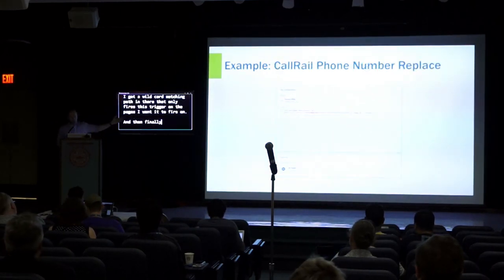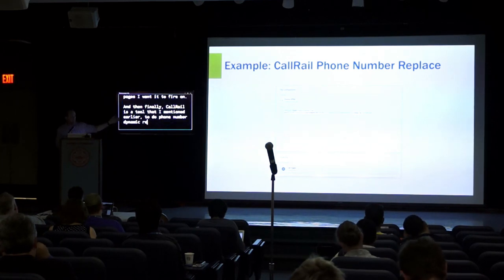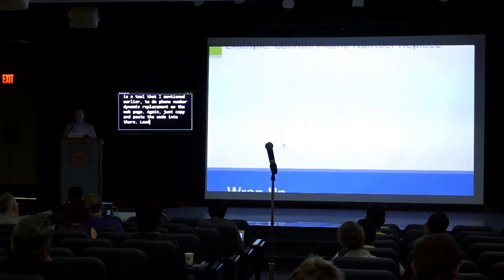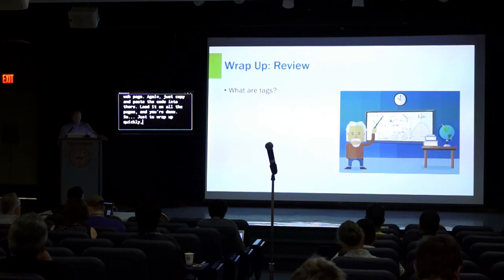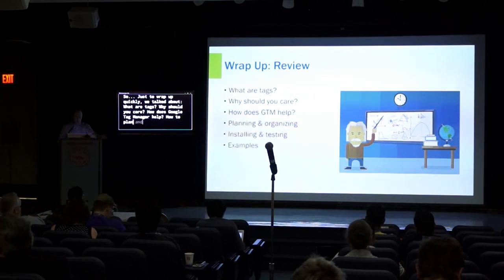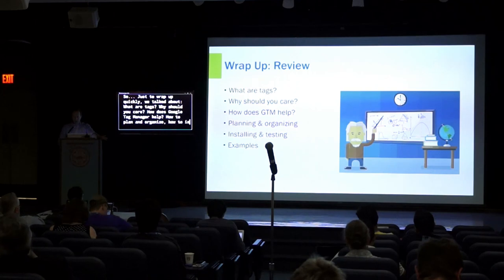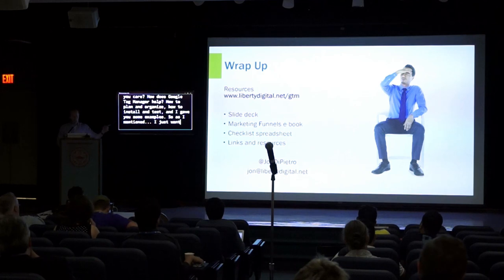Finally, CallRail is a tool I mentioned earlier for dynamic phone number replacement on the webpage. Again, just copy and paste the code in there, load it on all the pages, and you're done. So just to wrap up quickly, we talked about what are tags, why should you care, how does Google Tag Manager help, how to plan and organize, how to install and test, and I gave you some examples. As I mentioned, let me show you that link again — go ahead and type it in. It's a direct download that contains this slide deck, the marketing funnels ebook, that checklist spreadsheet, as well as some other links and resources.